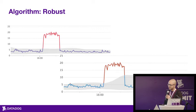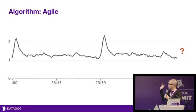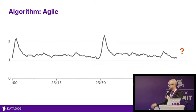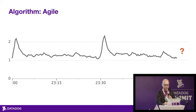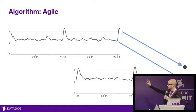Our next algorithm is called Agile. It's a robust version of the classical SARIMA model for time series. The main idea is that if you're trying to predict the next point, you probably want to use the points that came right before it — basically the same idea as BASIC. But the twist is that you also look at the same time of day from the day before, the week before, or several weeks before, to help inform what you think the next point should be.